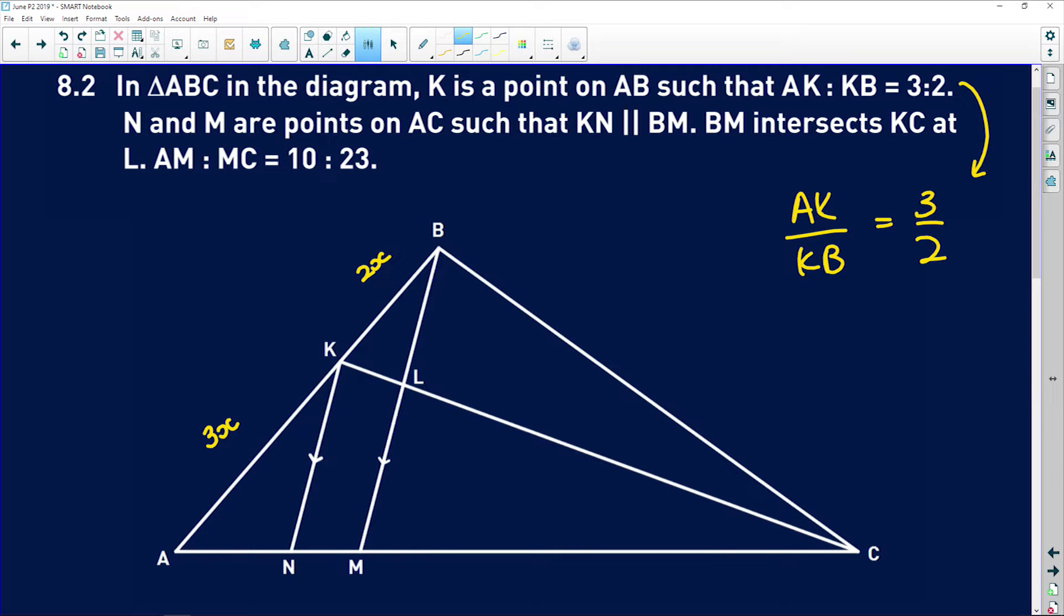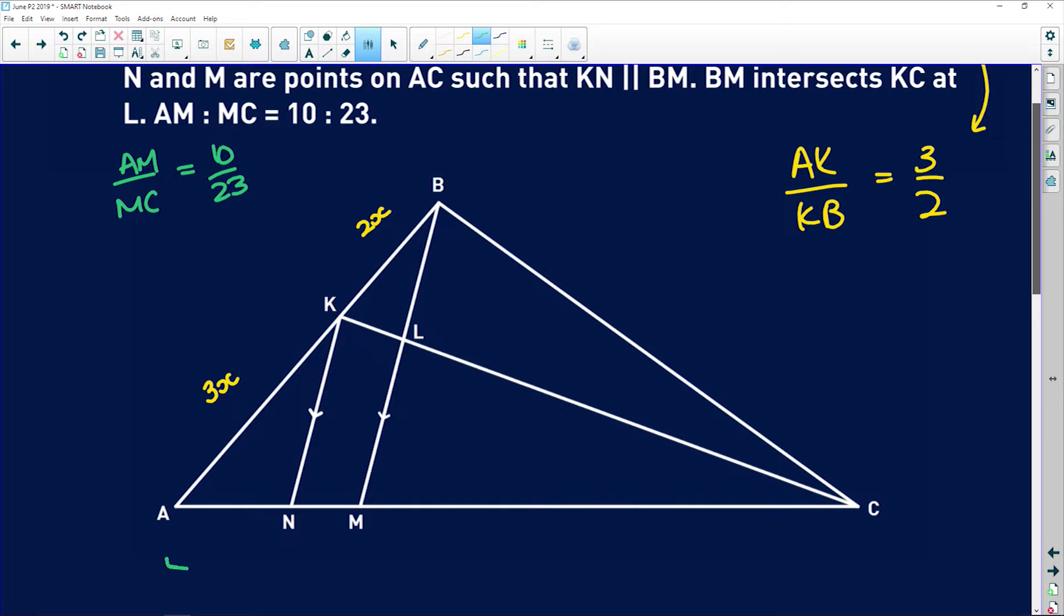N and M are points on AC such that KN is parallel to BM. That's shown in our diagram. Then it says BM intersects KC at L. Also shown on the diagram. AM to MC, or AM over MC, is equal to 10 over 23. So AM, which is this whole length here, is 10 times Y. AM to MC, which is this length here, is 10 to 23.